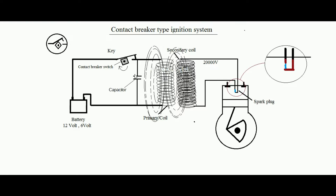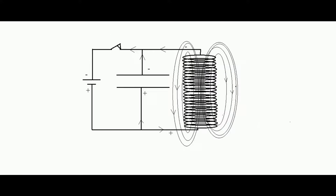When a capacitor is introduced in parallel to the primary circuit, how does it benefit the development of a spark? Consider a capacitor and a coil — technically called an inductor coil or inductance — both connected in parallel to a battery with a key K.